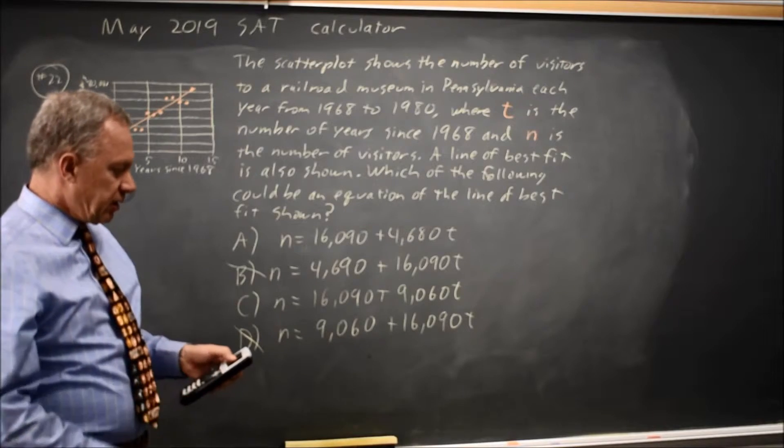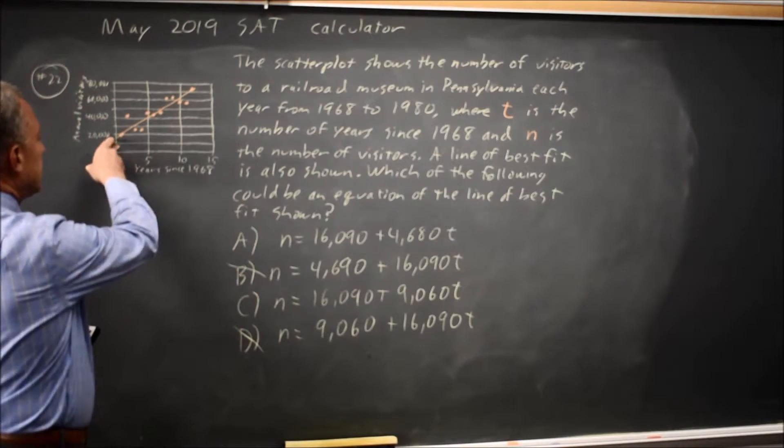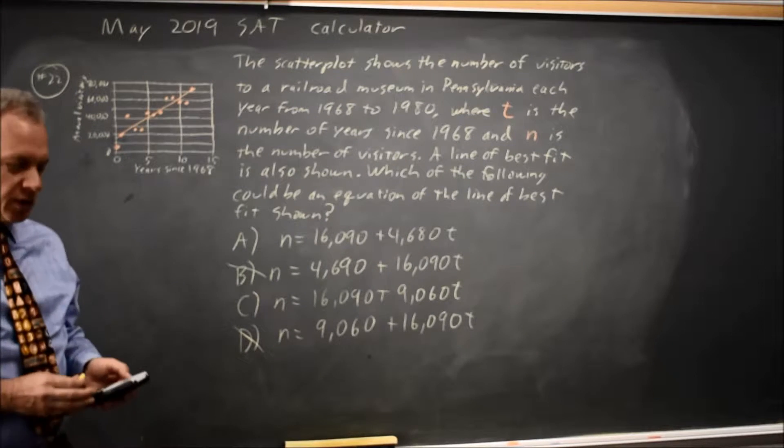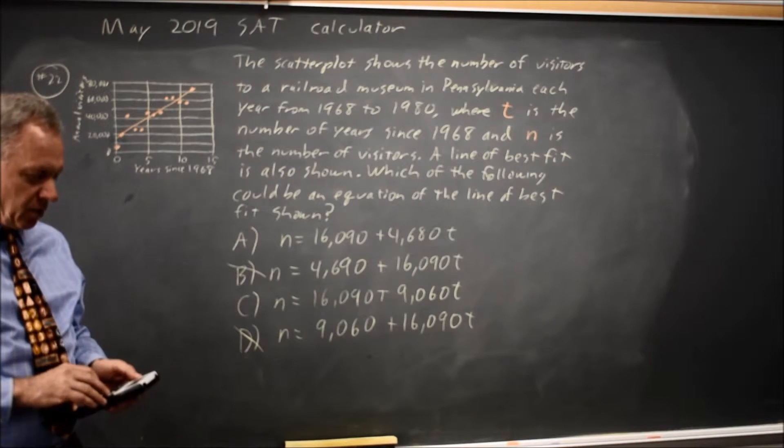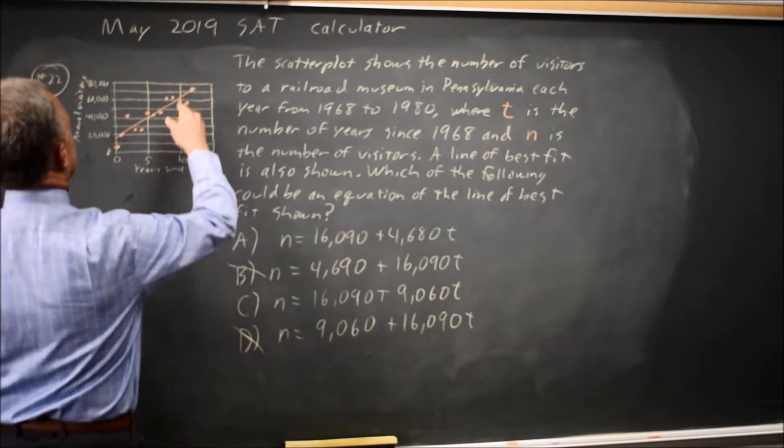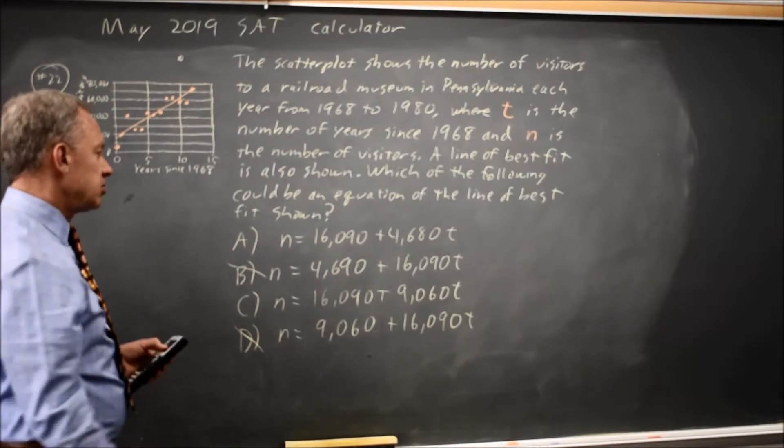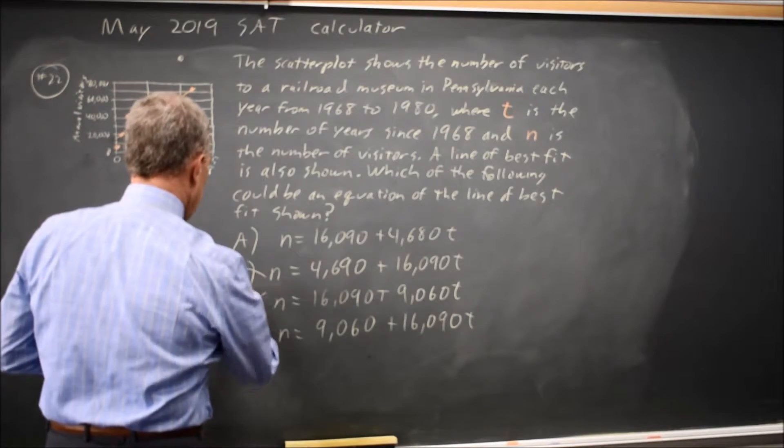And at t equals 0 I get 16,090 which is my intercept and that's at least reasonable for the graph. At t equals 10 I get 106,000. Y equals 10 is off the scale. That does not match the line of best fit. So choice C cannot be the correct answer.